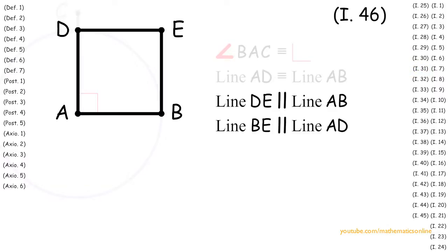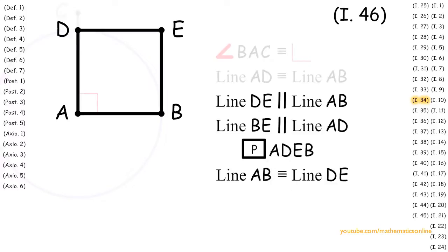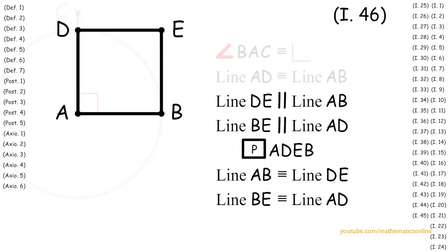Since we have two pairs of parallel lines that create shape ADEB, by definition 6 ADEB is a parallelogram. Now since ADEB is a parallelogram, by Proposition 34 the opposite sides are congruent. Therefore line AB is congruent to line DE and line BE is congruent to line AD.